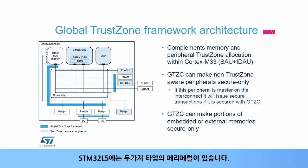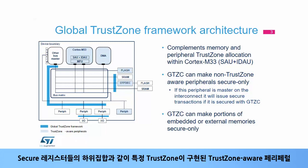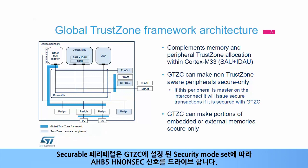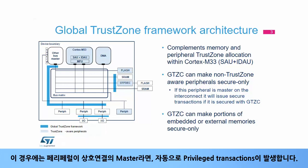Two types of peripherals are implemented in the STM32L5. Securable peripherals, which are protected by an AHB/APB firewall gate controlled by GTCC. TrustZone Aware peripherals, which implement a specific TrustZone behaviour such as a subset of registers being secure. TrustZone Aware AHB masters always drive the AHBSEC non-sec signal according to their security mode. Cortex M33 core and DMA are masters. Securable peripherals drive their optional AHBSEC non-sec signal according to the security mode set in GTCC. Like with TrustZone, a peripheral can be made privileged only with GTCC, and if this peripheral is master on the interconnect, it automatically issues privileged transactions.